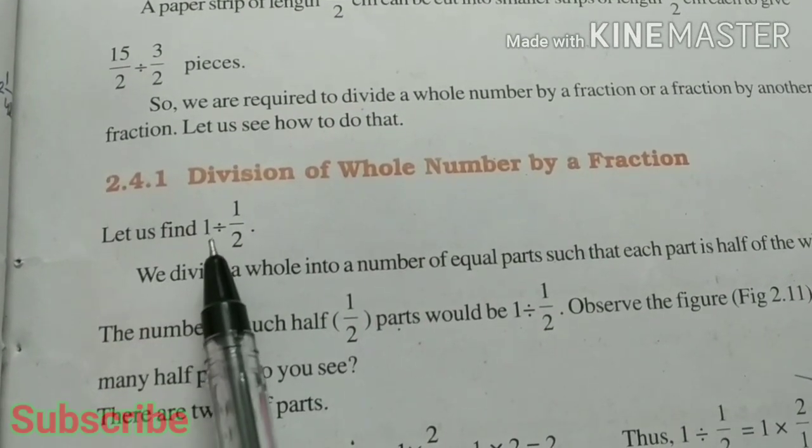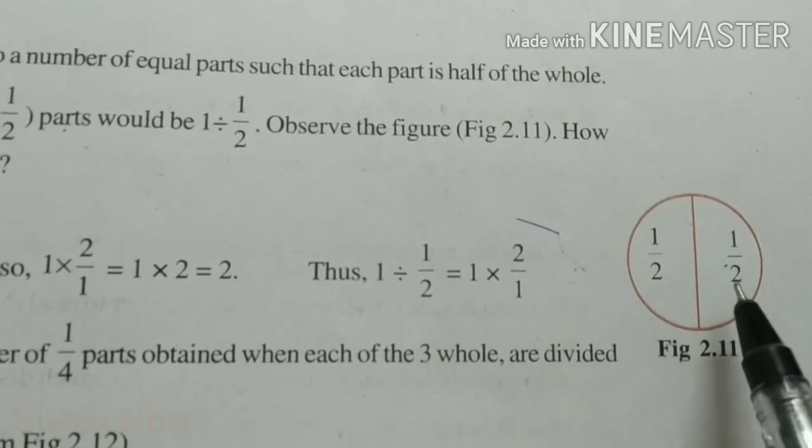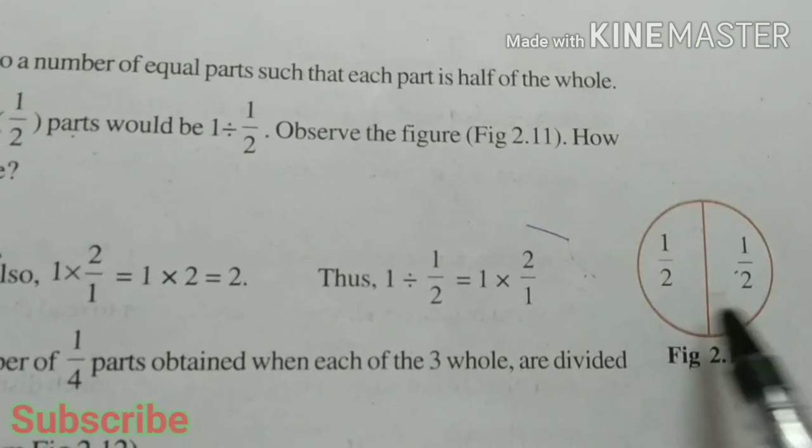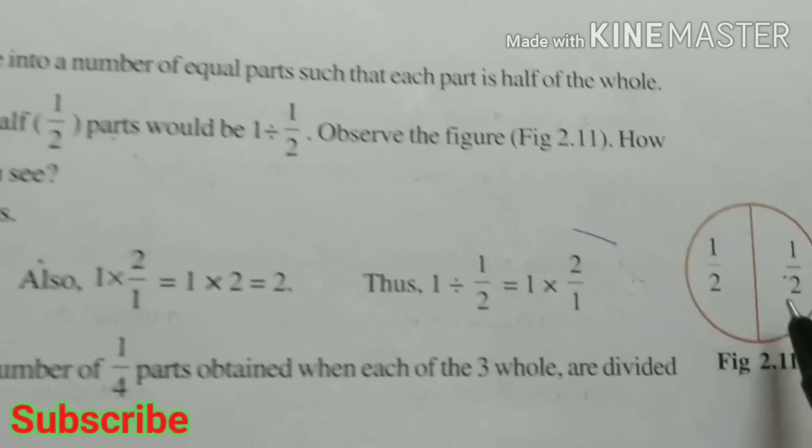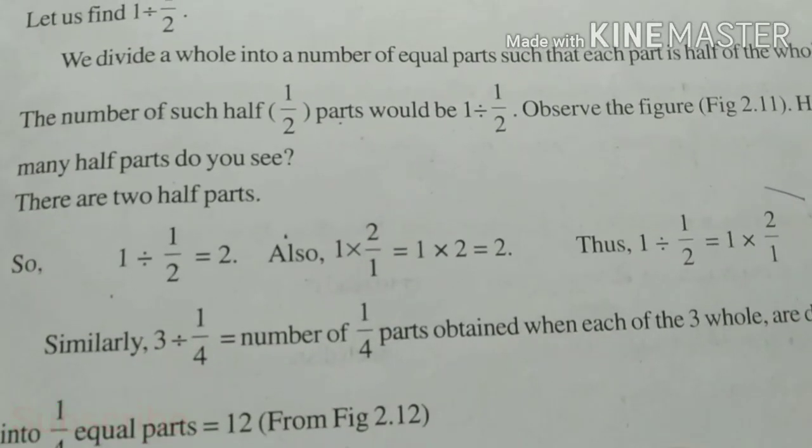First, 1 divided by 1/2. Here you can see 1 circle is divided by 1/2. So there are 2 parts. So the answer is 2. 1 divided by 1/2 is equal to 2.